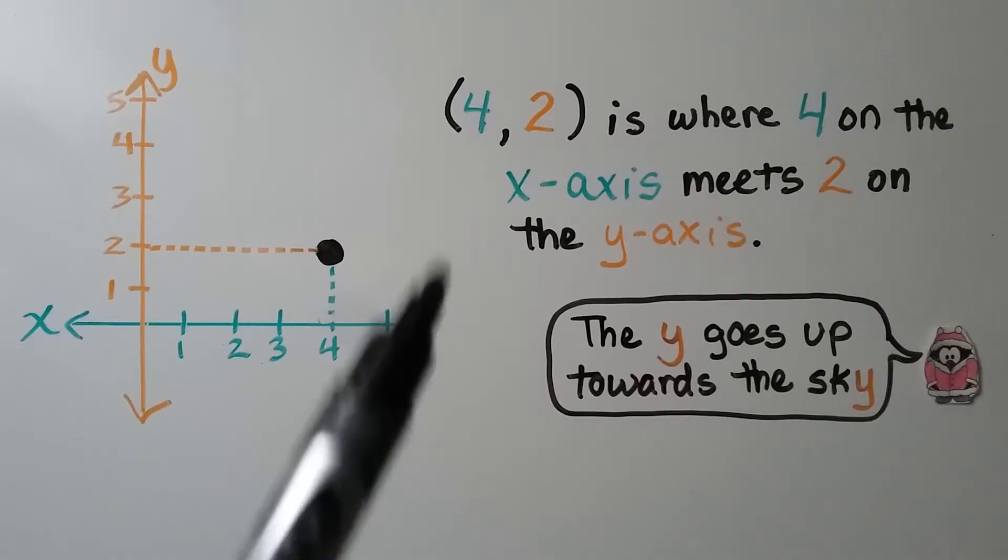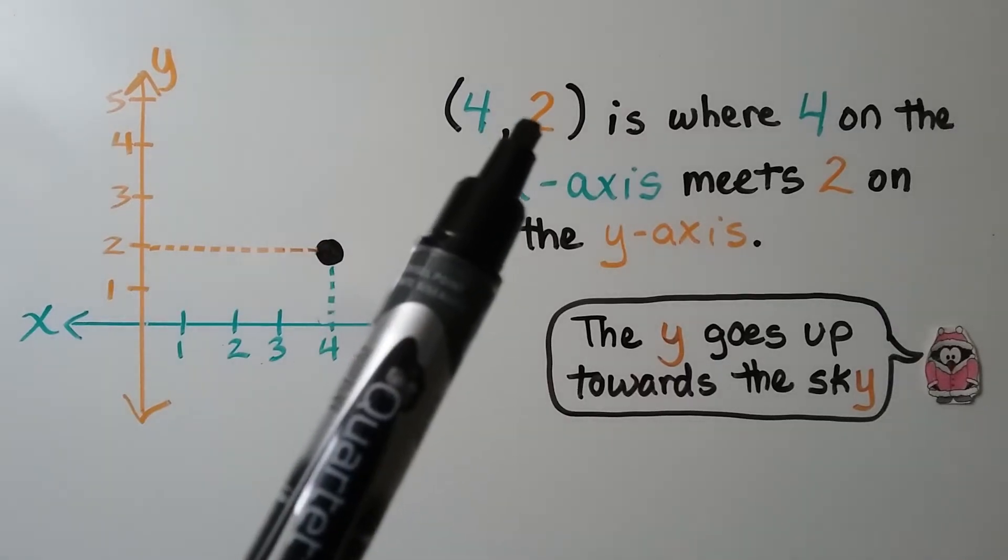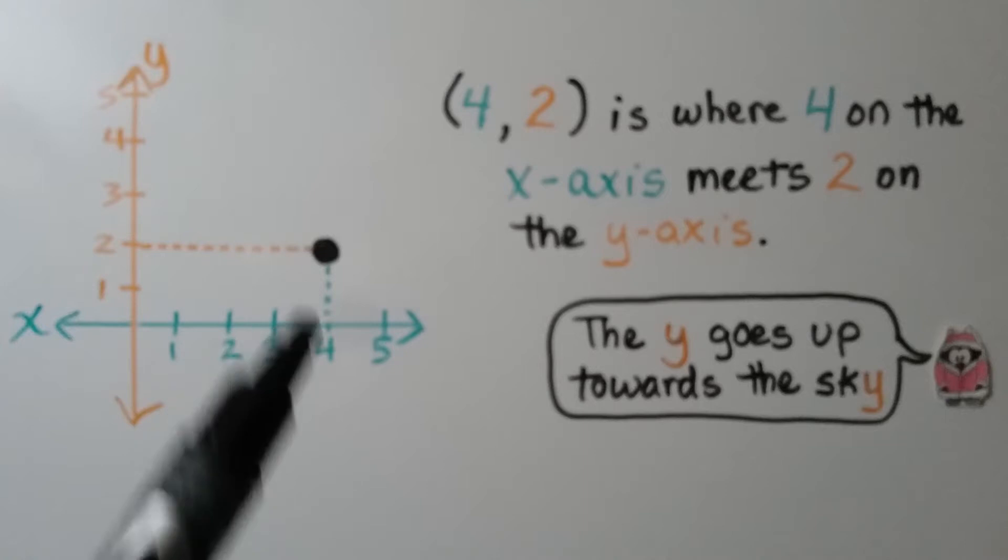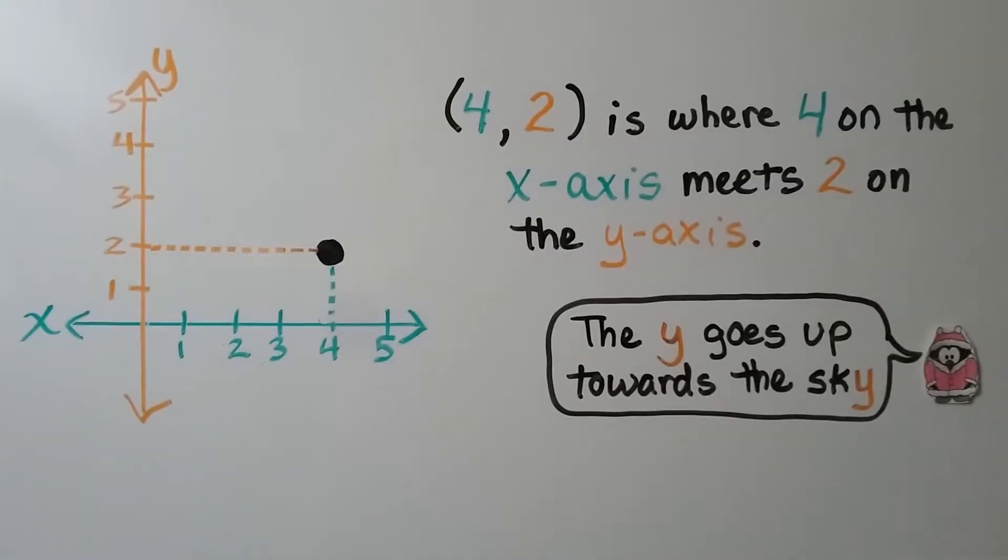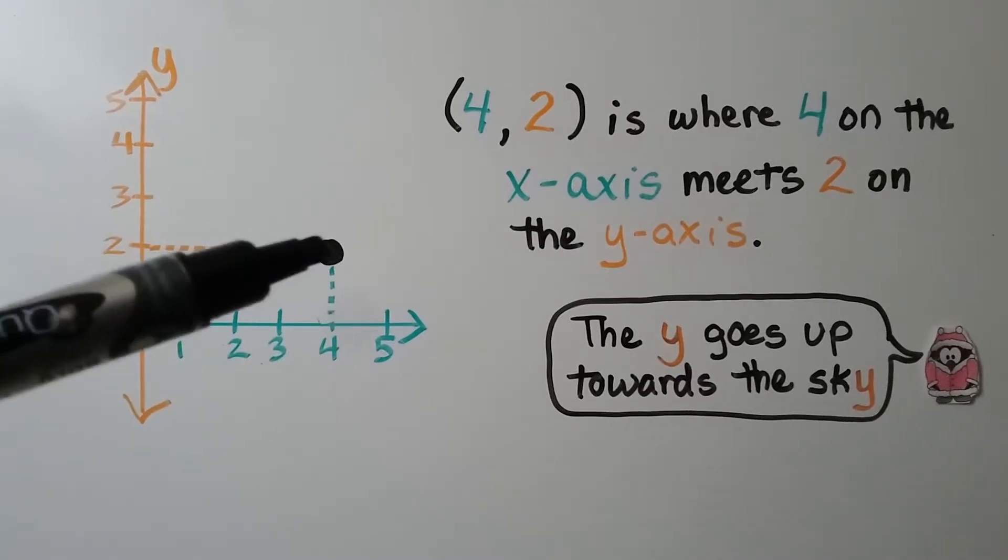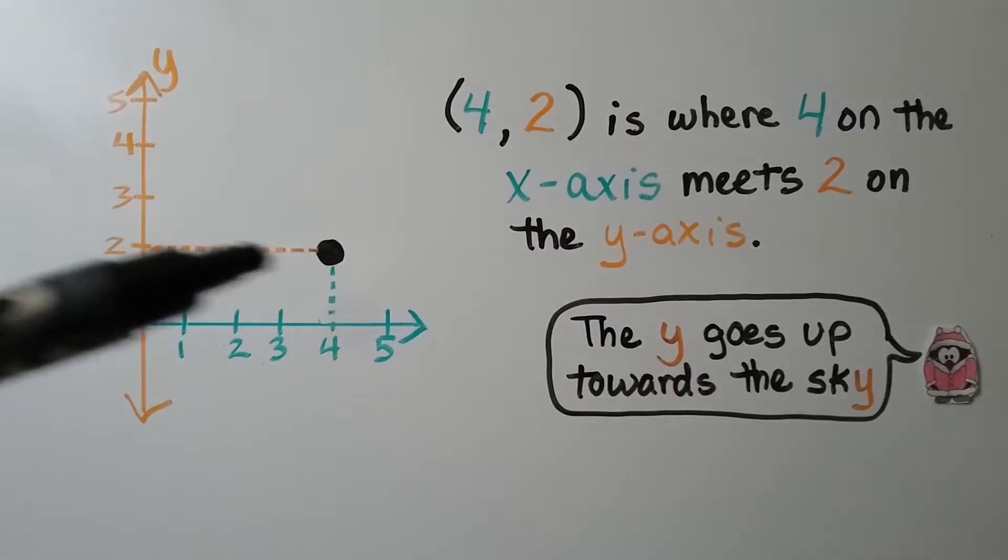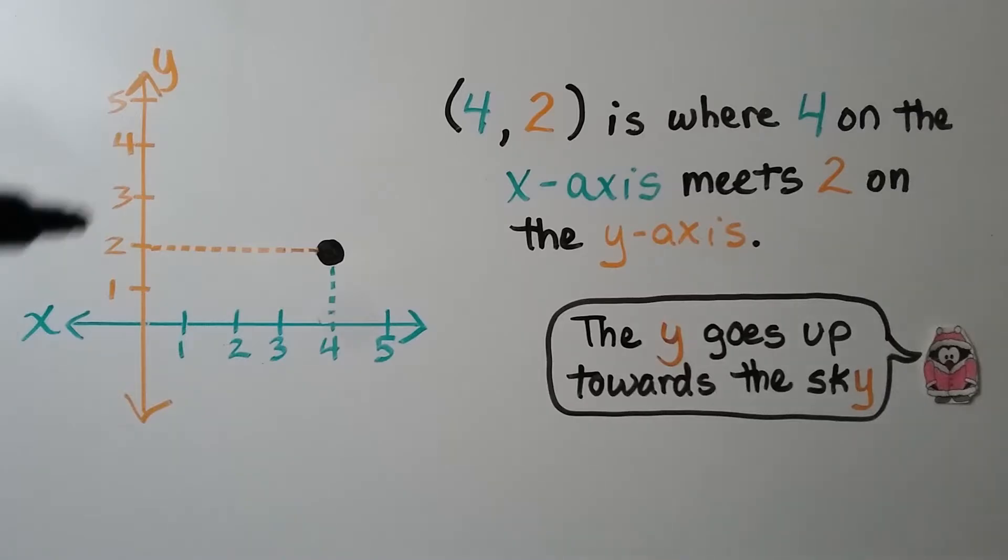For the ordered pair 4 for x and 2 for y, it's where 4 on the x-axis meets 2 on the y-axis. That's where they meet at 4, 2. You can remember that this one, the vertical one, is y, because we can remember the phrase, y goes up to the sky.